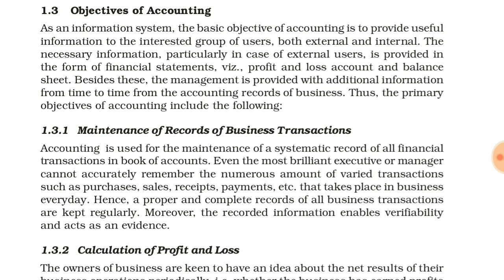As an information system, the basic objective of accounting is to provide useful information to the interested group of users, both external and internal. So accounting is a kind of information system, and its basic objective is that people who need knowledge related to the business can access it, whether they are internal or external.